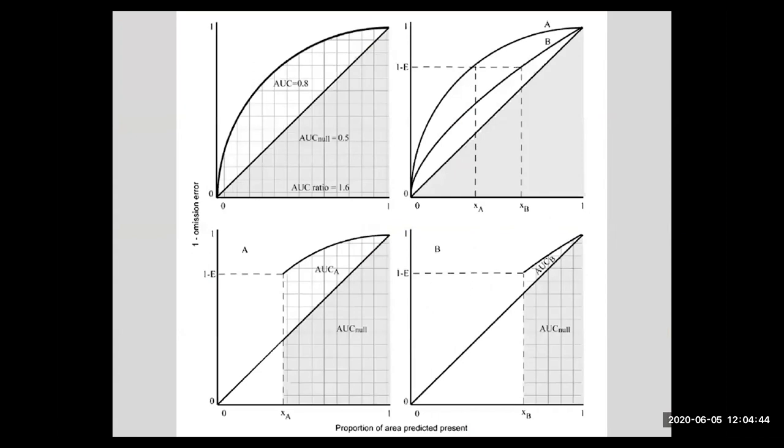Okay, so the modification we call partial ROC analysis is that the user defines some value E, which is how much omission error the user is willing to tolerate. Remember, this axis goes from zero omission error, and so we come down from zero omission error to this level by E units, and that essentially tells us where to cut off these curves. And then we develop AUC ratios, remember the 1.6 that I showed you here, we can develop those AUC ratios based on the ratio of this area to this area. And we can then ask whether that ratio is greater than 1.0.